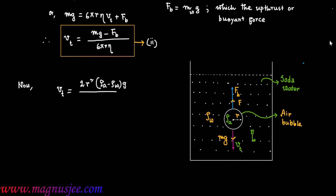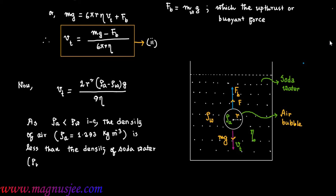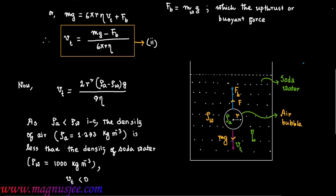From Equation 1, vt = r²(ρa − ρw)g / 9η. Since the density of air is less than the density of soda water — that is, ρa (≈ 1.290 kg/m³) is much less than ρw (= 1000 kg/m³) — the term (ρa − ρw) is negative. Therefore, terminal velocity vt will be less than zero, meaning vt is negative.